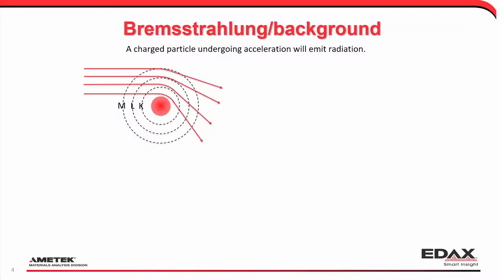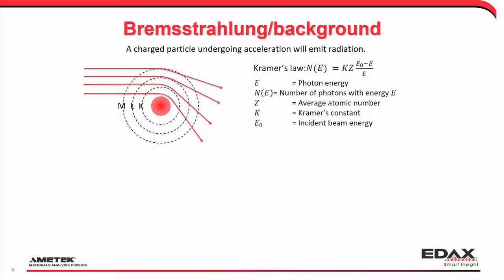One way to think of it: if we have the nuclei with electrons around it, an incoming electron — depending on how close it gets to the core — will have Coulomb interaction, changing the trajectory of the electron, meaning it accelerates or decelerates. Depending on how close to the core you get, you'll have different forces and different bending. The basic way of describing how many x-rays you get at certain energies is Kramers' Law, where the number of photons at a certain energy depends on a constant, the atomic number of the sample, the incident beam energy, and the energy you're looking at.